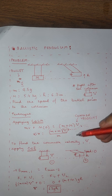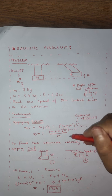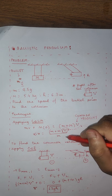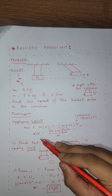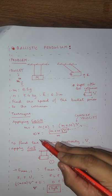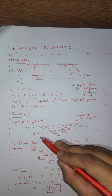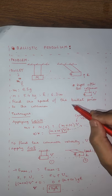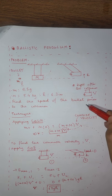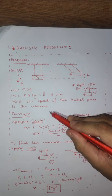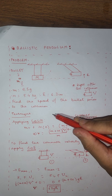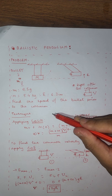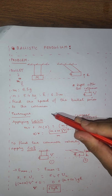If we plug those values in, we are able to compute small v, and small v is the speed of the bullet prior to the collision — that is, before the collision. Thank you.